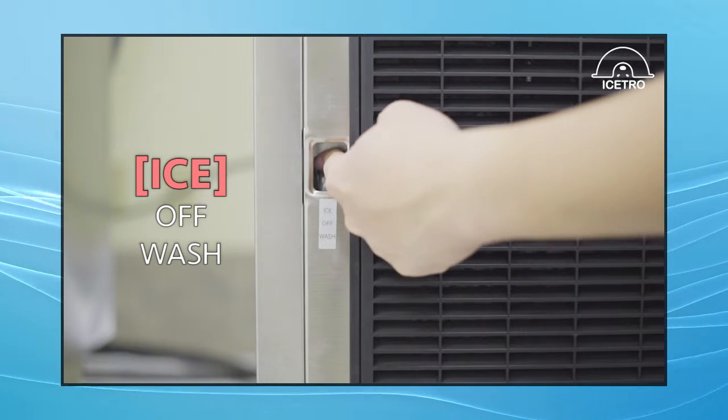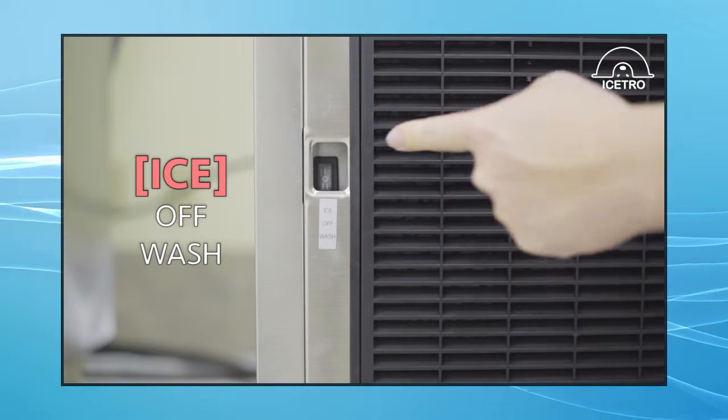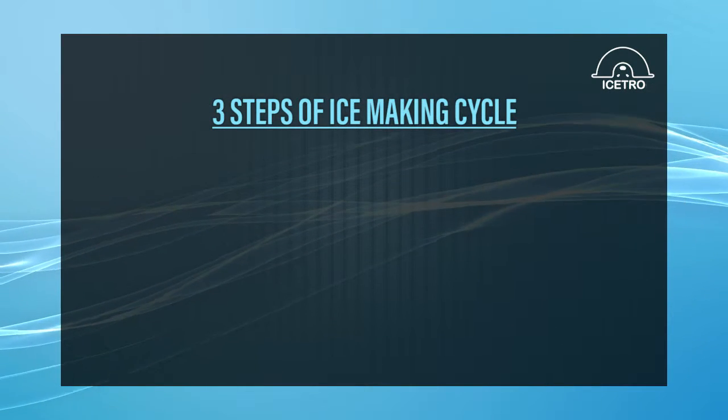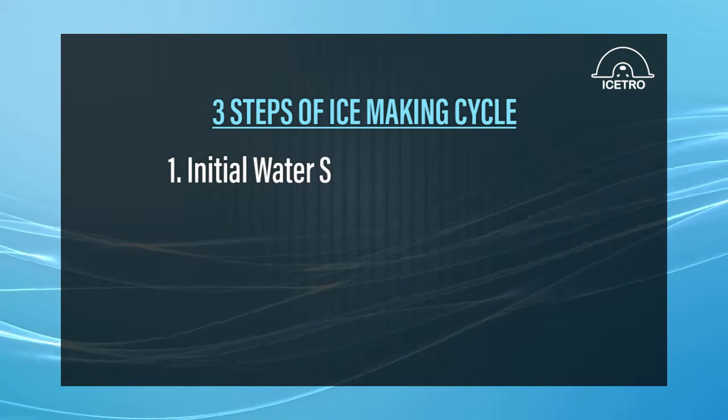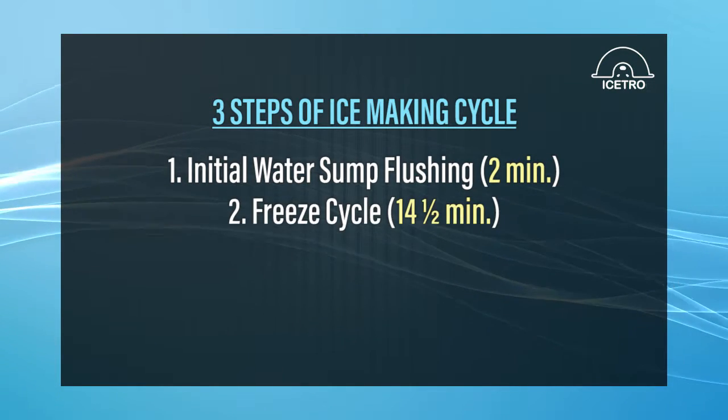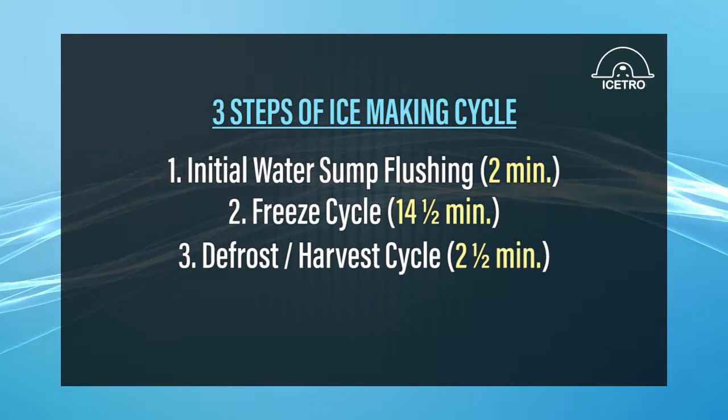The entire ice making cycle takes approximately 19 minutes and has three steps. First, the initial water sump flushing. Second, the freeze cycle. And third is the defrost harvest cycle.